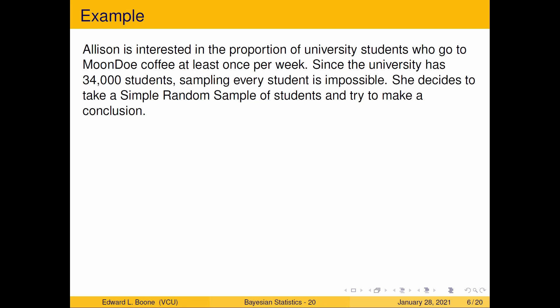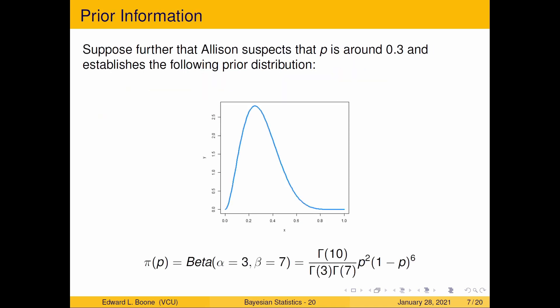Allison is interested in the proportion of university students who go to MoonDoe Coffee at least once per week. Since the university has 34,000 students, sampling every student is virtually impossible. She decides to take a simple random sample of students and try to make a conclusion.